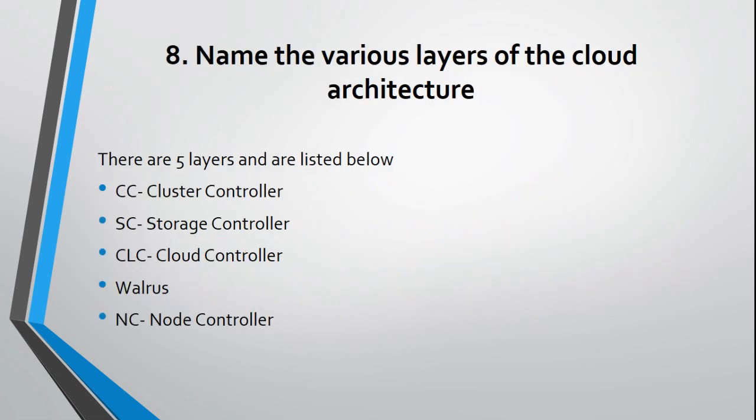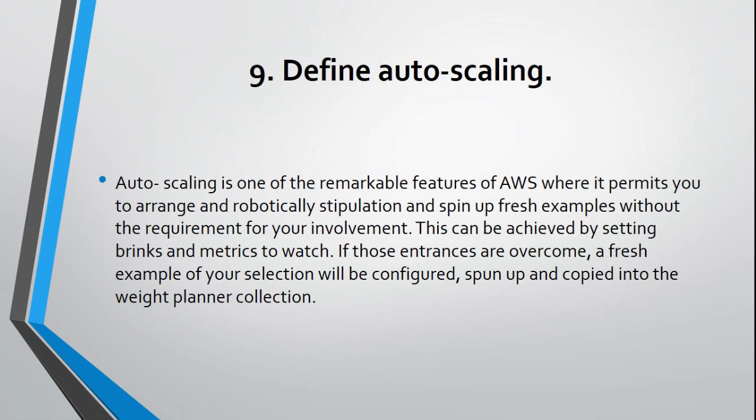Question 8: Name the various layers of the cloud architecture. There are 5 layers listed below: CC – Cluster Controller, SC – Storage Controller, CLC – Cloud Controller, Walrus, and NC – Node Controller.